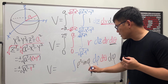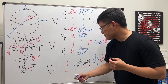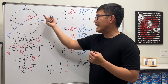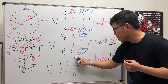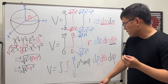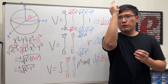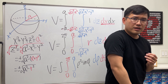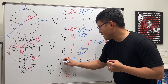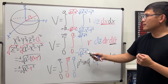Now let's figure out the limits of integration for ρ, θ, and φ. For ρ: ρ is the distance from the origin to the sphere, so it goes from 0 to a. For θ: that's the horizontal rotation, which goes from 0 to 2π. For φ: you start from the positive z-axis and rotate down — that's only from 0 to 180 degrees, which is 0 to π.